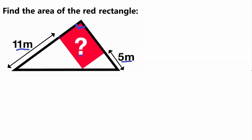This means that this smaller triangle here, since this angle is 90 degrees, is a right triangle. And this angle on the other side is also 90 degrees, since every angle of a rectangle is 90 degrees.